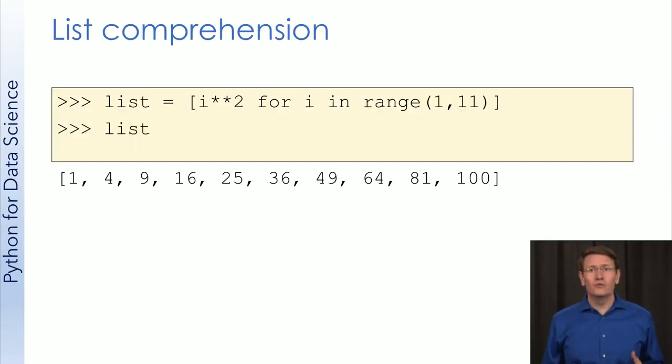This command here will build this list for us. Notice how short it is. But there are a number of pieces here. First, let's focus on the for i in range 1 through 11. This will provide i with the values 1 through 10, just like we're used to with for loops.